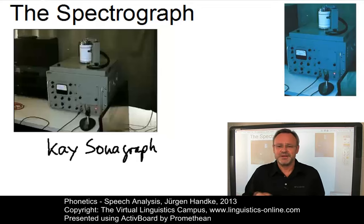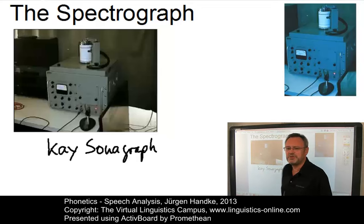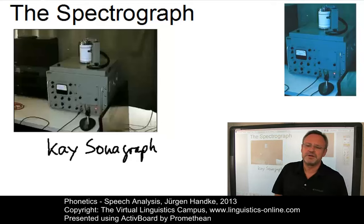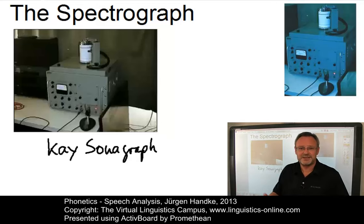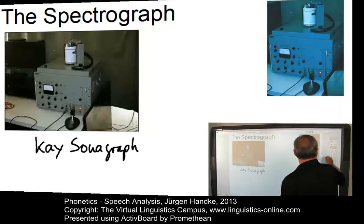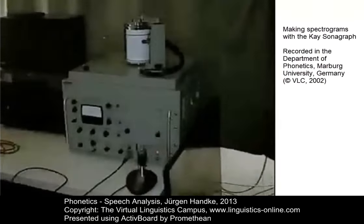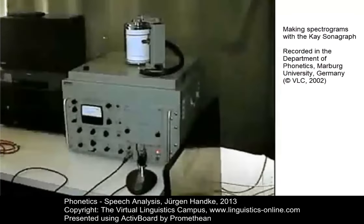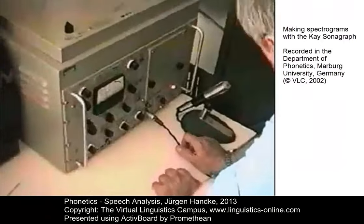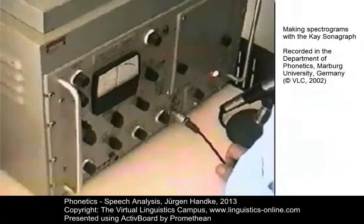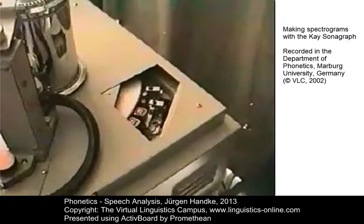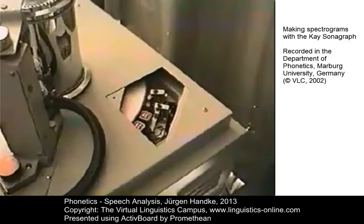Here is a short video we recorded in our department of phonetics about 10 years ago — they still had a K-sonagraph then. Until recently, spectrograms were produced using the K-sonagraph, a device invented in the 1940s that analyzes a sound wave into its component frequencies and displays the frequency spectrum on paper.